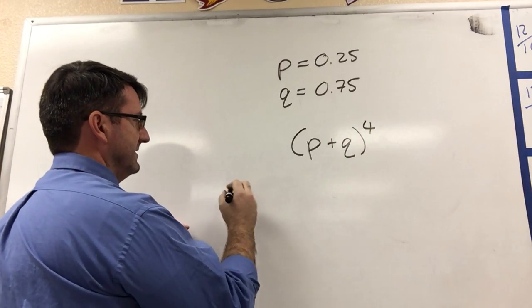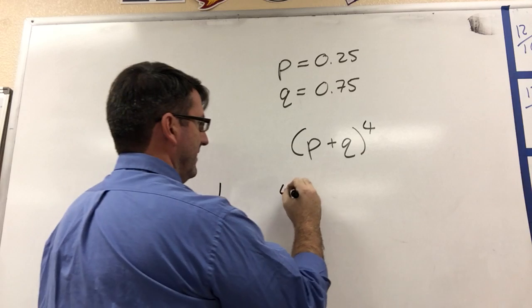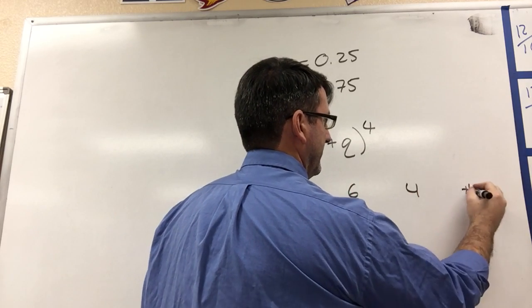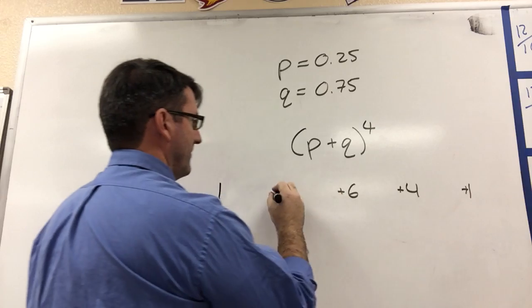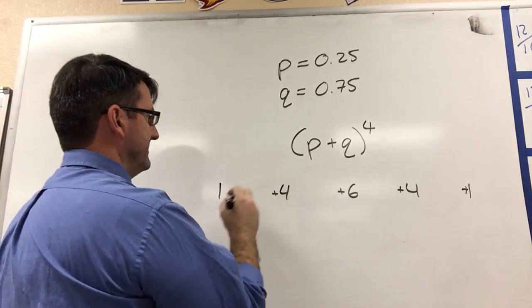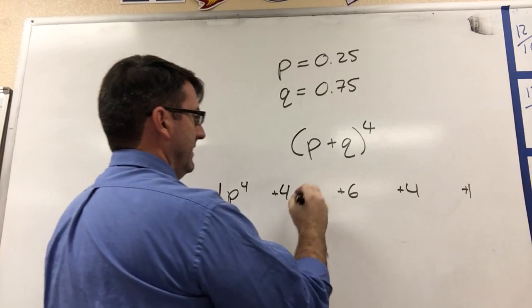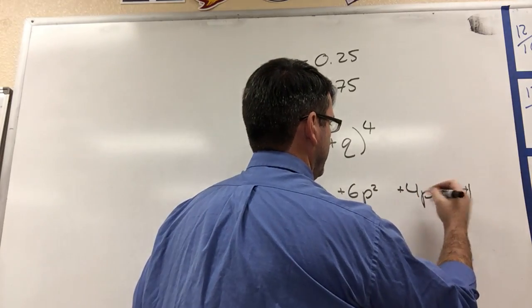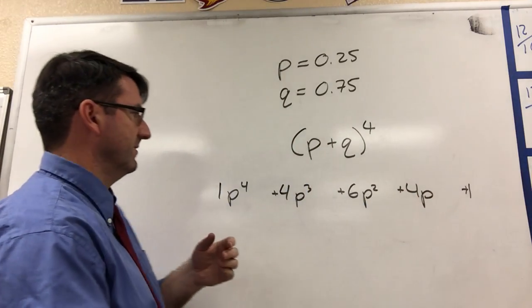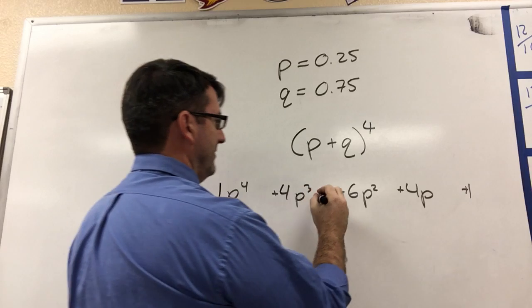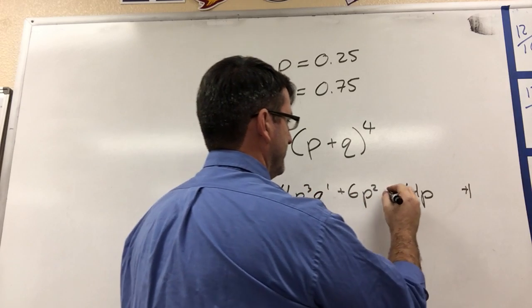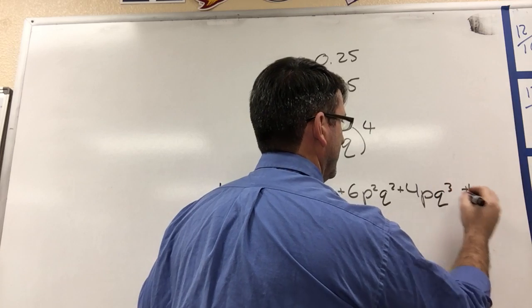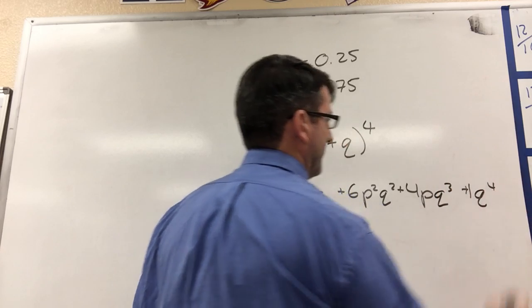Pascal's triangle tells us that the coefficients are going to be 1, 4, 6, 4, and 1. And we're going to start with P to the 4th, P to the 3rd, P squared, P to the 1st, and then P to the 0. And then Q to the 0, Q to the 1st, Q squared, Q to the 3rd, and Q to the 4th.